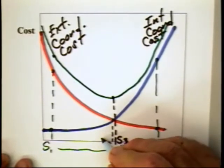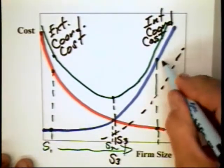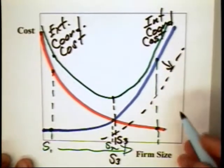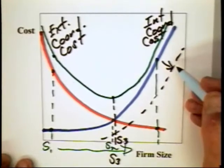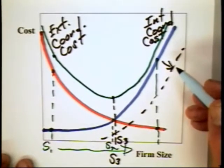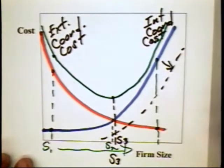If the internal coordinating costs go down, this curve would move in that direction. These costs may go down because the firm has found a more efficient way of paying workers too. They pay for performance and as a consequence they don't have to incur as many monitoring costs.